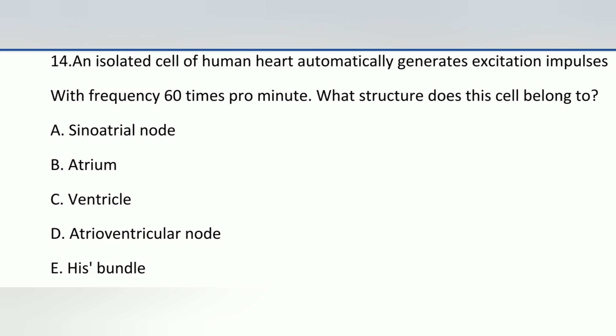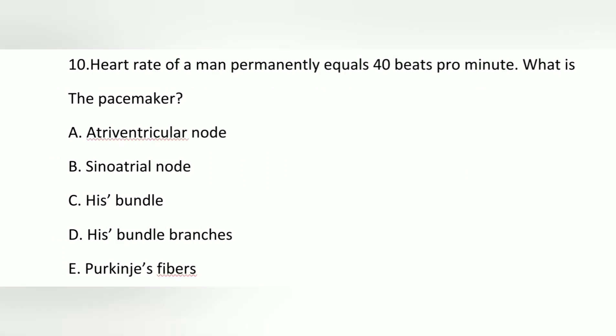Here the question asks about a frequency of 60 times per minute. The SA node has 60 to 80 bpm. The AV node can generate 40 to 60 beats per minute, so for 40 to 60 bpm, the answer is the AV node.